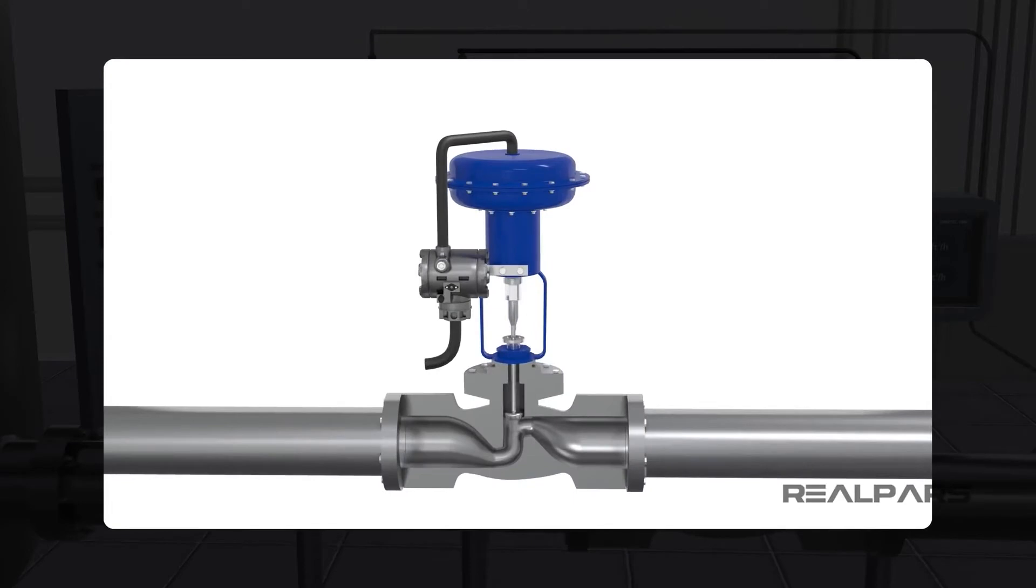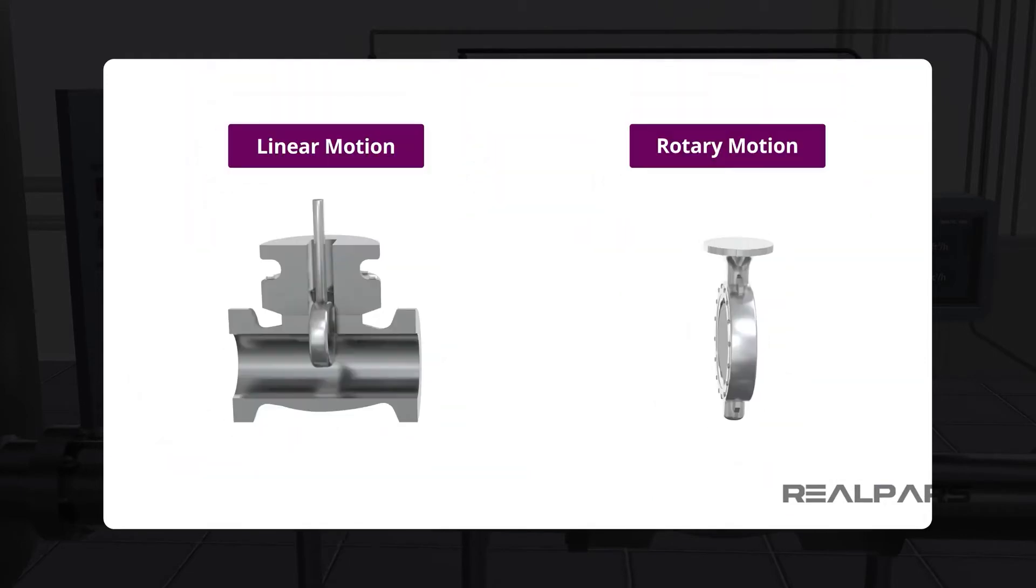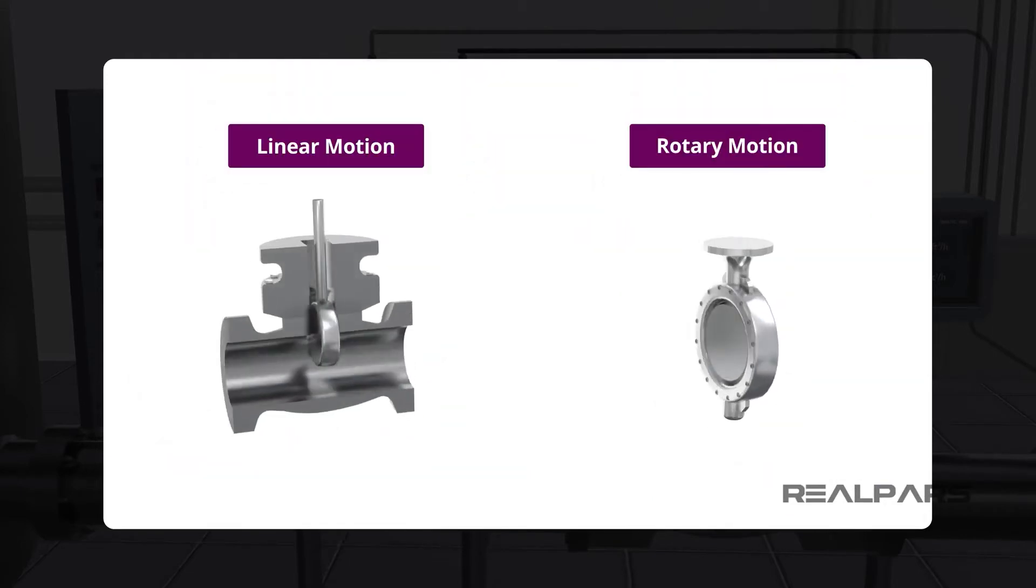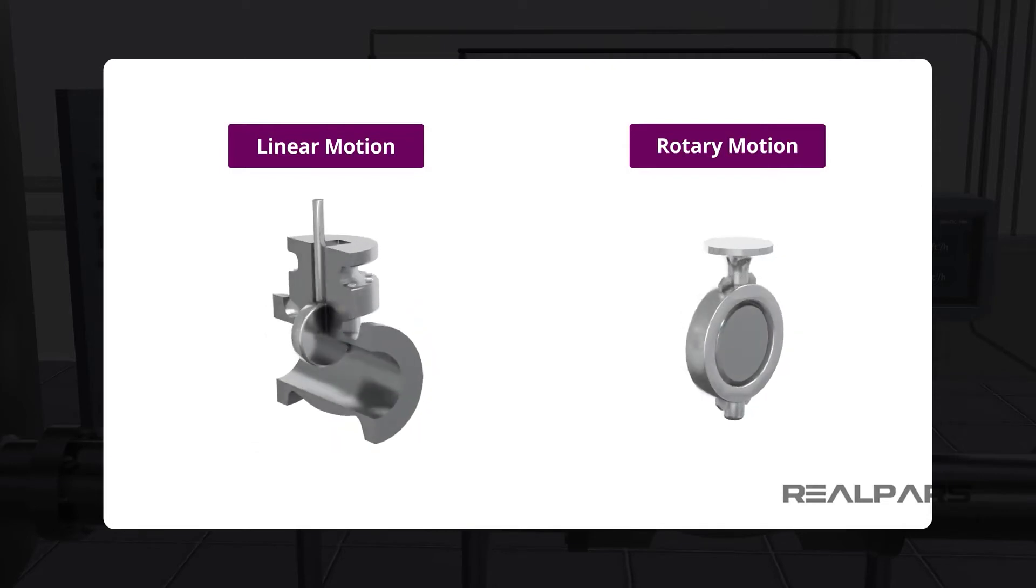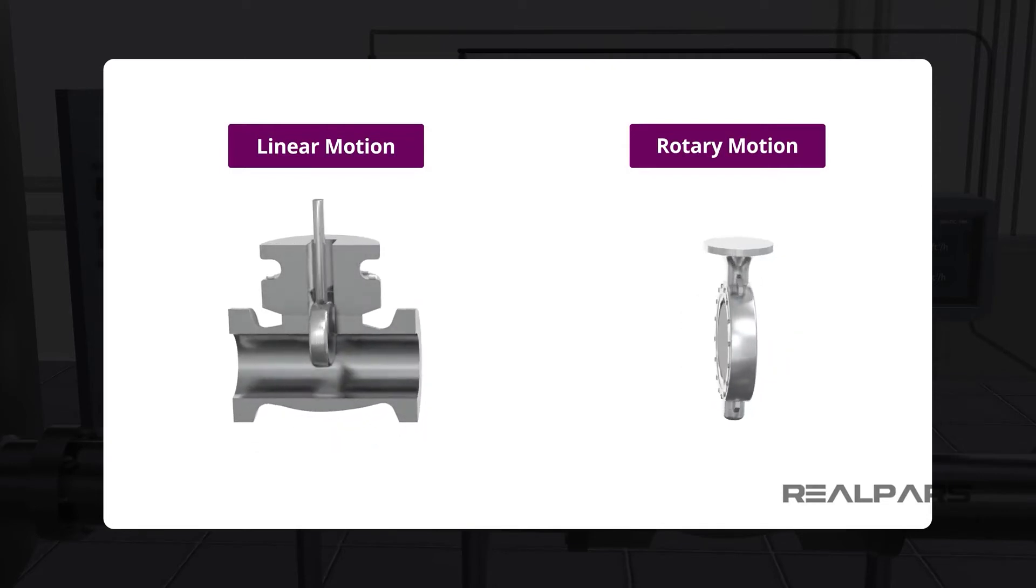A control valve has two separate components: the valve and the actuator. Valve bodies are of different types or styles depending on service conditions, piping layout, and desired application. The two classes of control valves are linear motion and rotary motion.